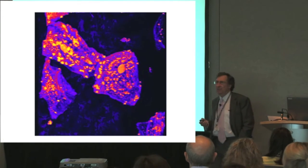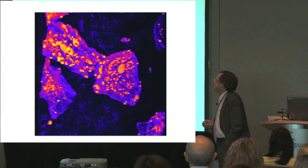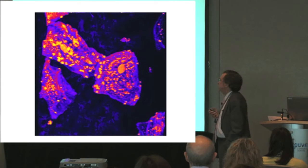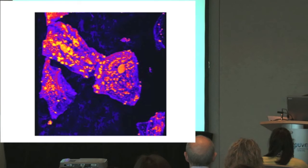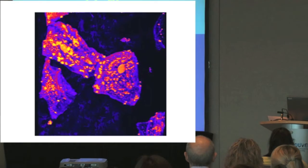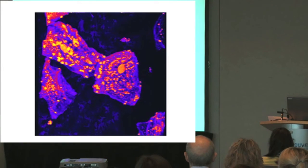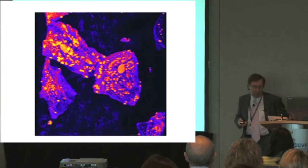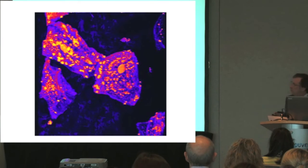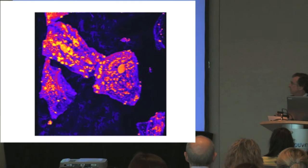This is the typical arrangement in the oral cavity or at any epithelial surface. You can see the classic arrangement of bacteria on such a surface — small numbers of bacteria attached to the surface. And that's the classic arrangement of bacteria colonizing a human being.